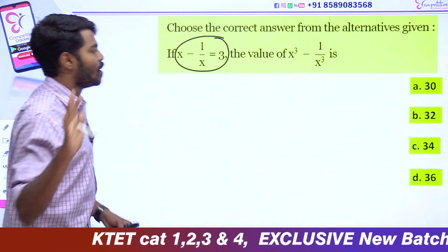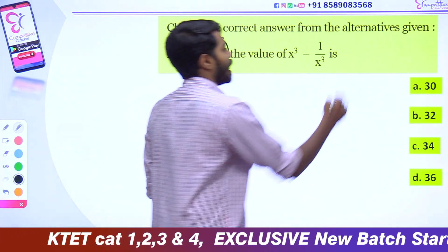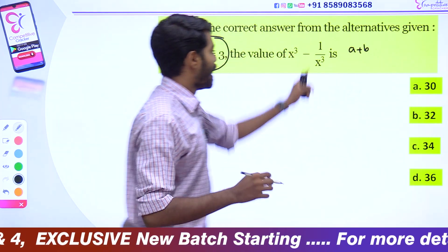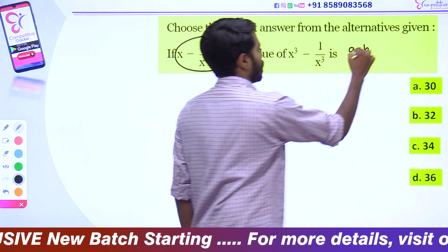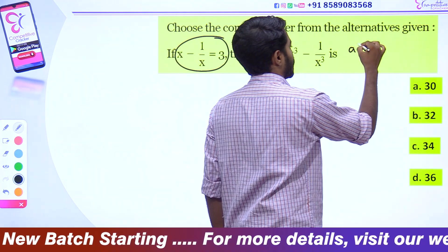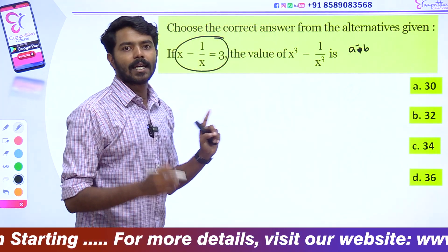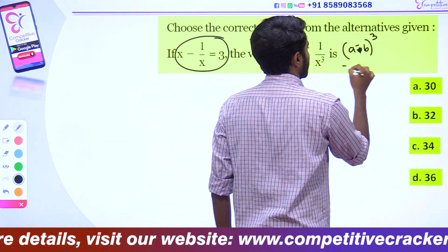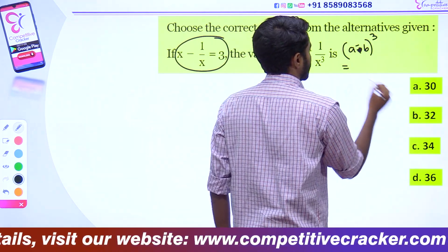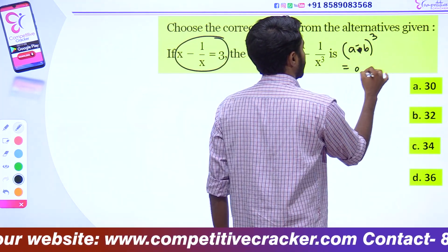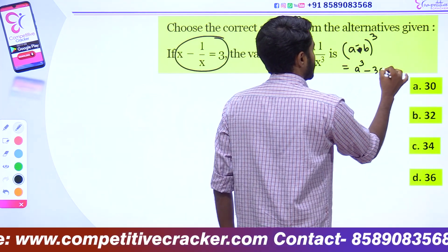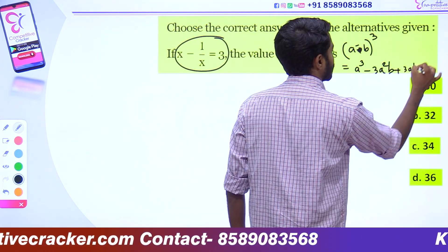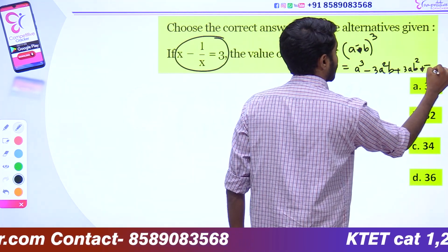If you are talking about the same equation — why do we have the same equation? A plus b is minus 1, so we have a minus 1. Now, a minus b the whole cube is equal to a³ minus 3a²b plus 3ab² minus b³.